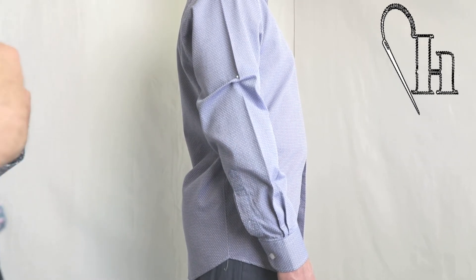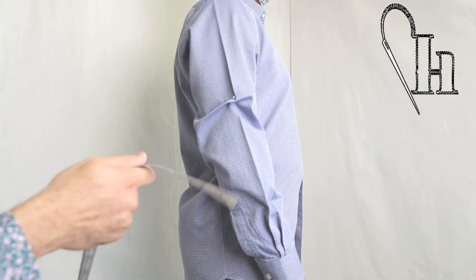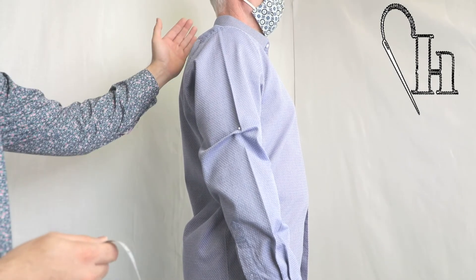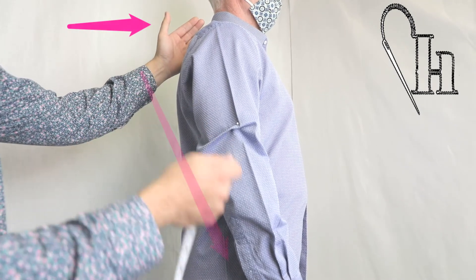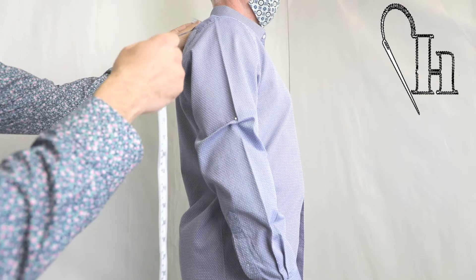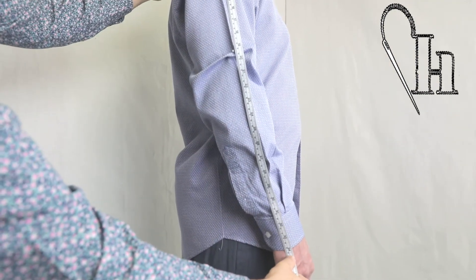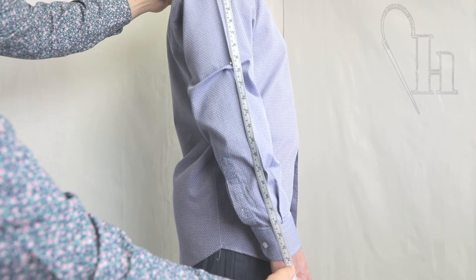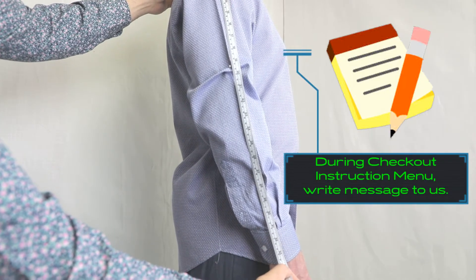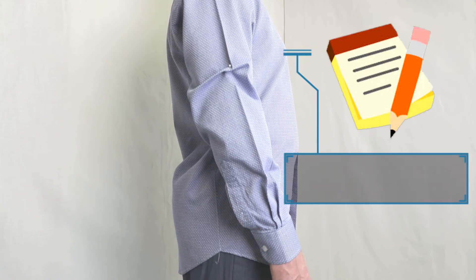If you do have a tape measure handy, what we can do is measure from center neck down the sleeve like so. And this shirt sleeve is 34. You can just write that in the description menu and we'll have that to you.